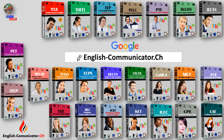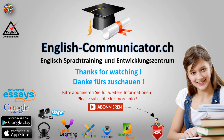Writing is the process of using symbols — letters of the alphabet, punctuation and spaces — to communicate thoughts and ideas in a readable form. Writing is the productive skill in the written mode. To write clearly, it is essential to understand the basic system of a language. In English, this includes knowledge of grammar, punctuation and sentence structure.